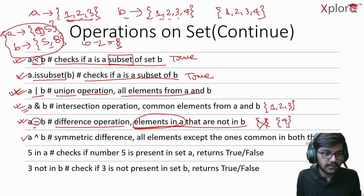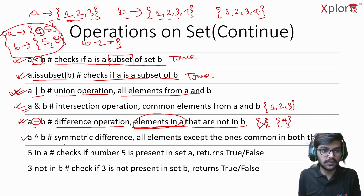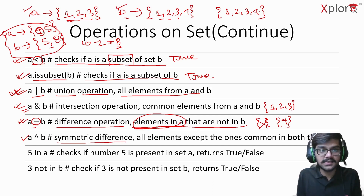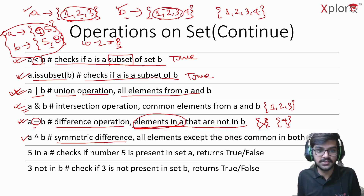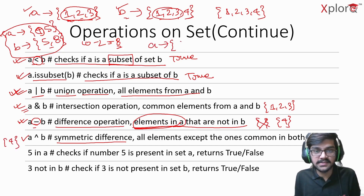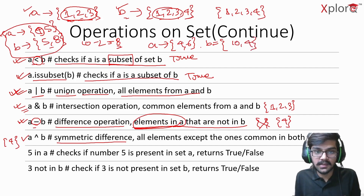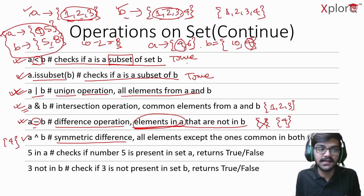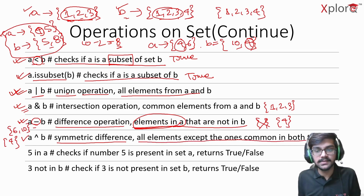The symmetric difference operation uses the caret symbol 'a ^ b' and returns all elements except the ones common to both sets. For A = {1, 2, 3} and B = {1, 2, 3, 4}, the common elements are 1, 2, 3, so the output is {4}. Another example: if A = {4, 6} and B = {10, 4}, then 4 is the common element, so the output is {6, 10}.